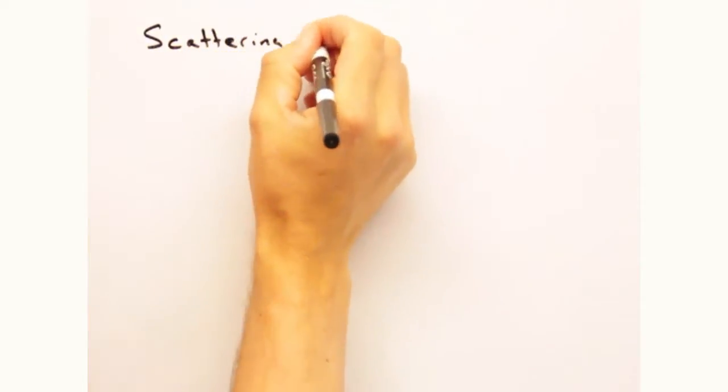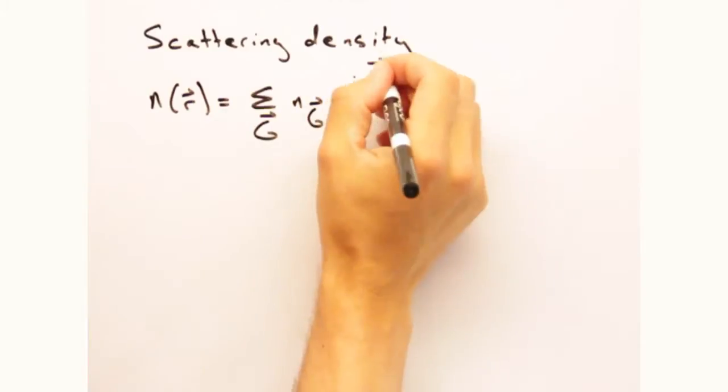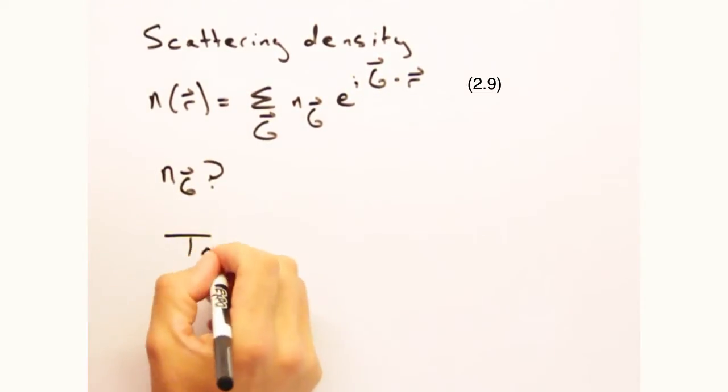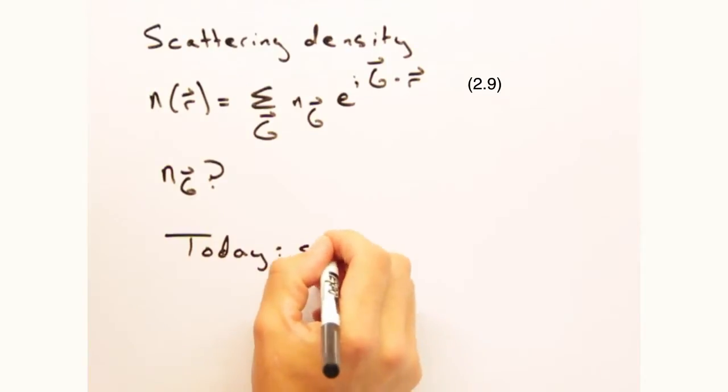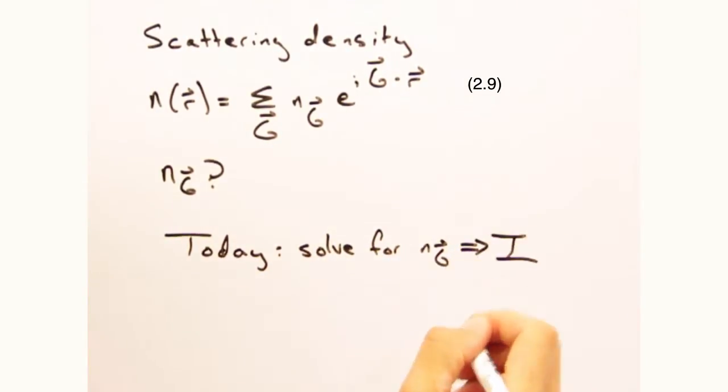So last time we built up an expression for our scattering density, n of r, assuming something infinitely periodic, but we didn't really cover how to solve for the Fourier coefficients. So today the goal is to dive into one method for solving for these coefficients, and thus finally being able to develop an expression for the intensity we've been promising you for a while now.